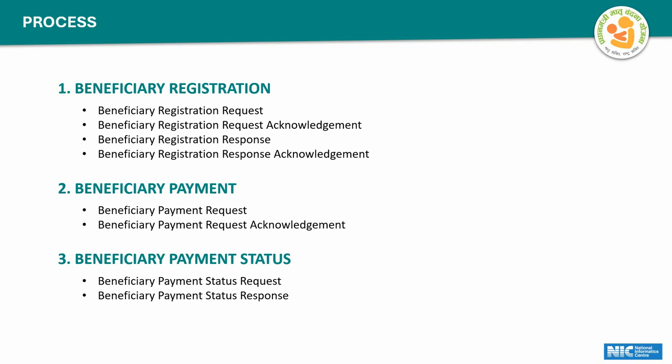The payment process is subdivided into two parts: we send a request to PFMS to pay the beneficiary, and PFMS acknowledges receipt of the request but does not tell us the payment status. To know the payment status, there is a third step where we send a request to PFMS and they respond with the current status of each beneficiary.